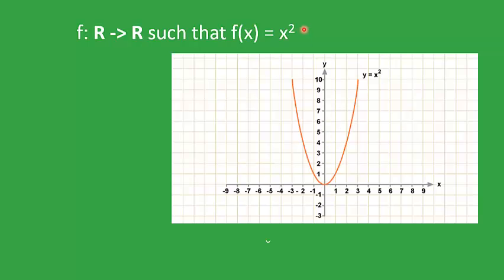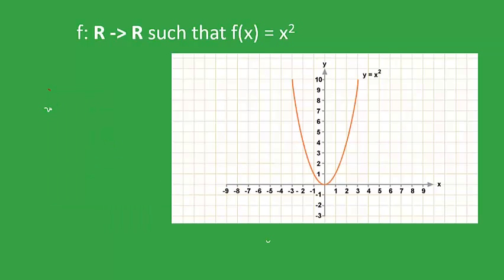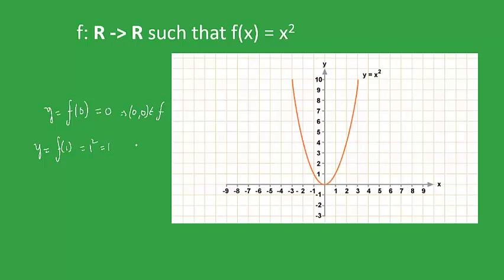If you put x equals 0, y equals x² gives y equal to 0 as well. Therefore (0, 0) is an element of f. Likewise, (1, 1) also lies on this graph — as you put x equals 1, y comes out to be 1. So the element (1, 1) also belongs to f.